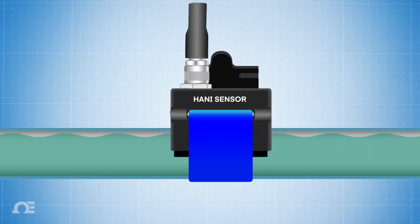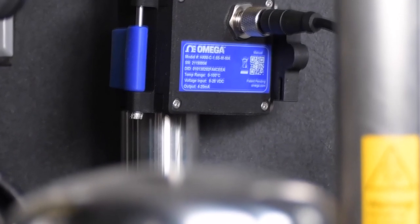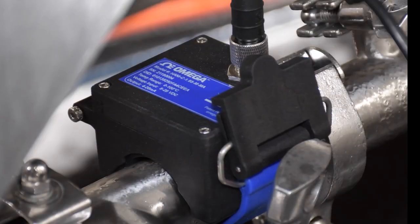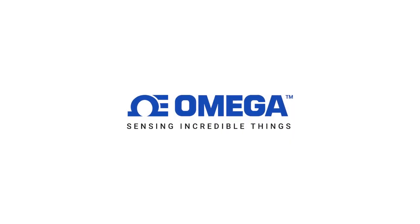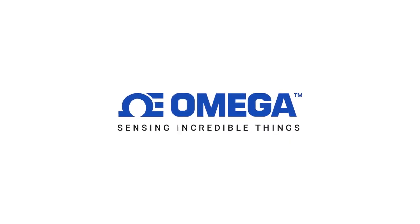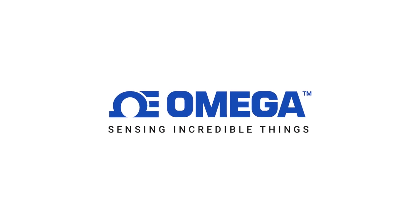This is exactly what the HANI does, and it's accurate to within plus or minus half a degree Kelvin. And there you have it. Visit Omega.com and download the white paper for a deeper dive, or call one of our engineering experts.